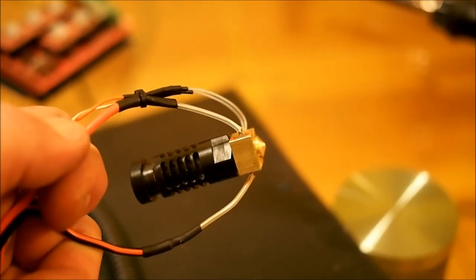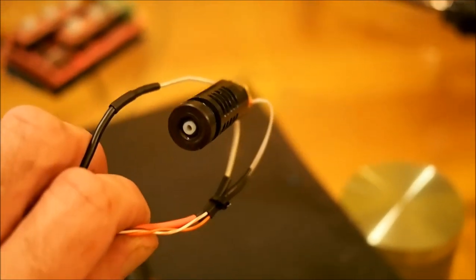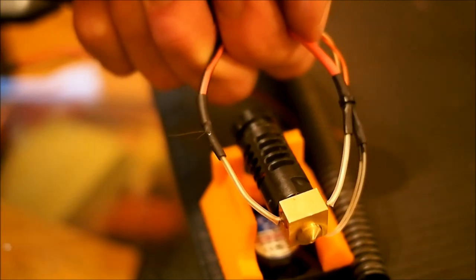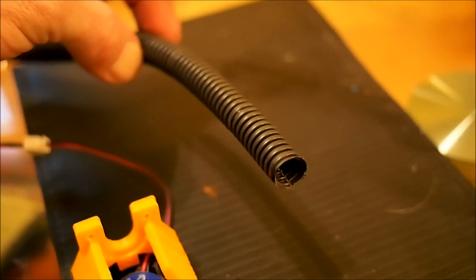You can see our completed hotend assembly here. Everything's soldered together. We've got our cables going off to the back. This is eventually going to slide into that fan assembly right there and all of the wires will be covered with this 10mm housing.